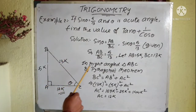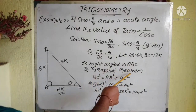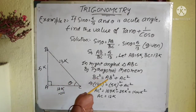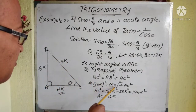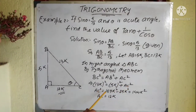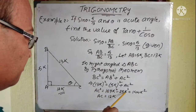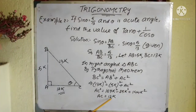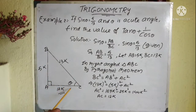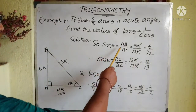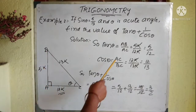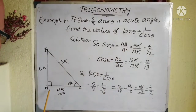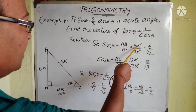In right angle triangle ABC, by Pythagoras theorem, BC squared equals AB squared plus AC squared. BC is 13k, AB is 5k, so 13k squared equals 5k squared plus AC squared. AC squared equals 169k squared minus 25k squared equals 144k squared. So AC equals 12k. Now, tan theta equals AB by AC, which is height by base: 5k by 12k — k cancels — so tan theta equals 5 by 12.